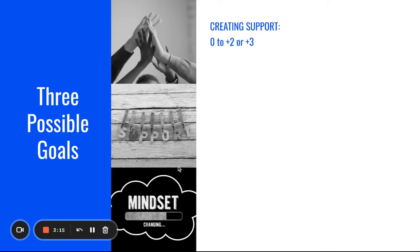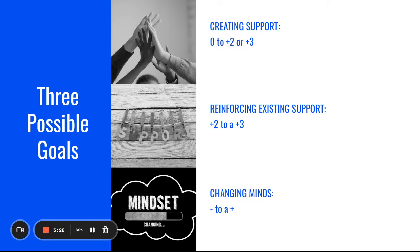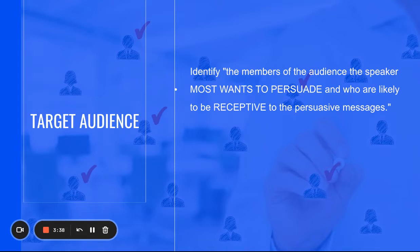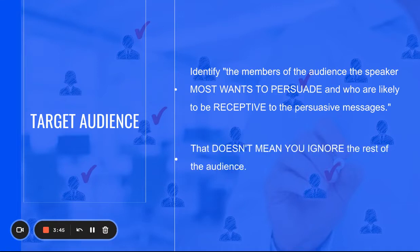There are three possible goals: create support by taking someone from zero to the positive side; reinforce existing support by moving someone who already agrees further along the continuum; or change someone's mind, moving them from the negative side toward the positive. For target audience, identify the members most likely to be receptive to your persuasive message — that doesn't mean you ignore the rest of your audience, but consider who is most persuadable.